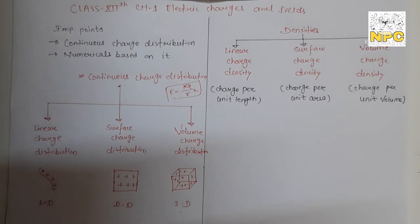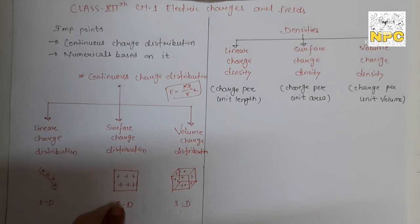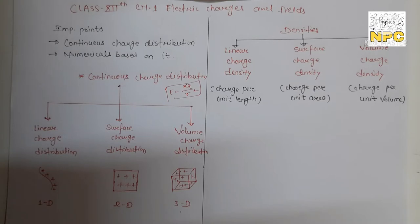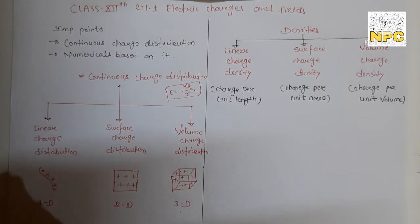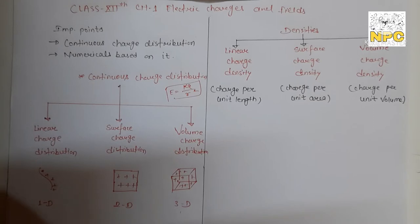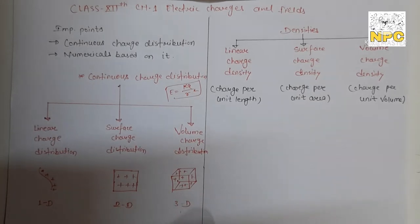If we take a surface - for example, if you take a plate and distribute charges on it - this is called surface charge distribution. It is two-dimensional, meaning the body exists in any two planes: x-y, y-z, or z-x. This is surface charge distribution.